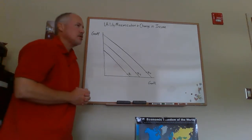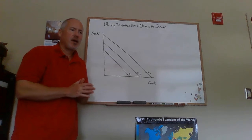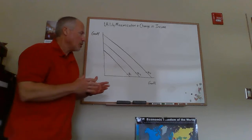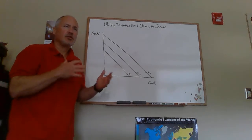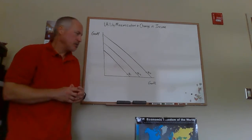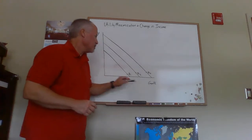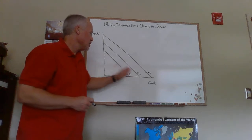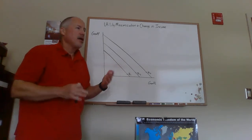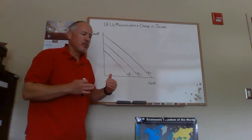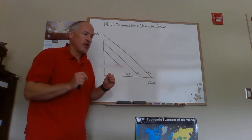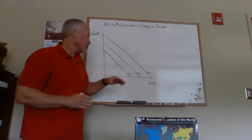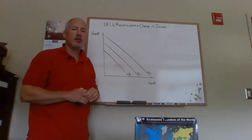This video is going to go over utility maximization and how it changes as people's income changes. We're going to show how we get the income expansion path. I've started here with a budget line and indifference curve diagram with two goods x and y. When income changes and prices stay the same, the budget line shifts parallel.